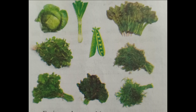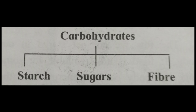Children, do you know fruits and vegetables, grains and pulses are also sources of fiber in food? If our food does not contain enough fiber, it can lead to constipation. Children, we have to learn about three types of substances present in our food: starch, sugar, and fiber.